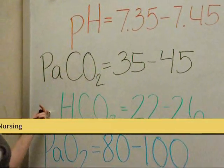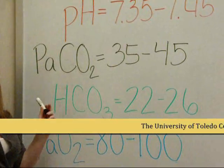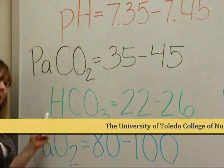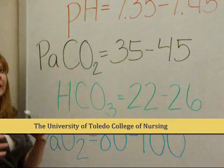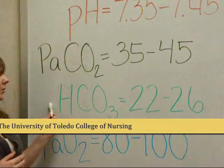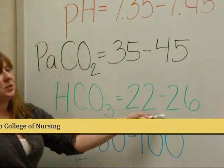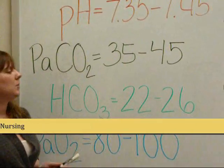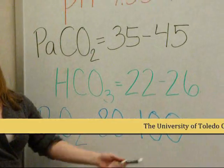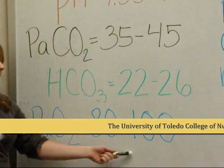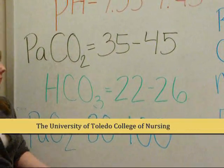Bicarb is colored green because it comes from your kidneys — kind of inside the gut, so green. Normal bicarb is 20 to 26. And normal oxygen is 80 to 100, which is just a normal baseline value you should know.